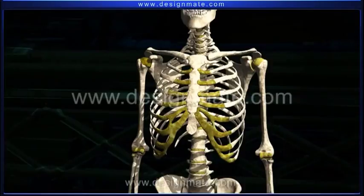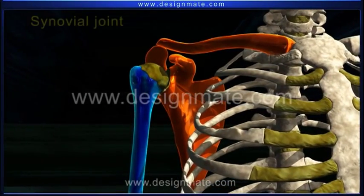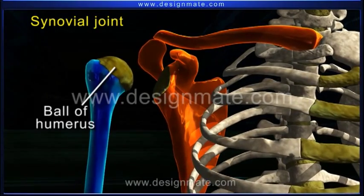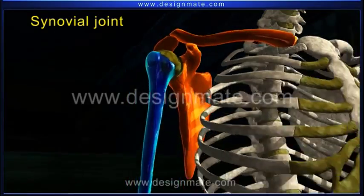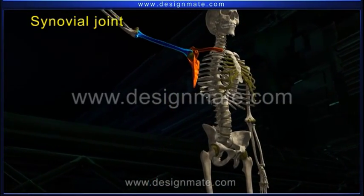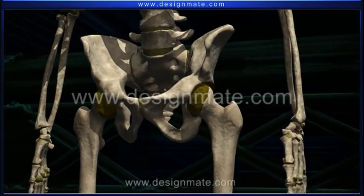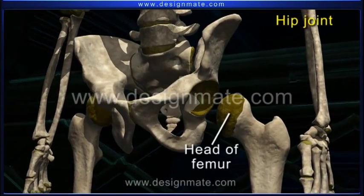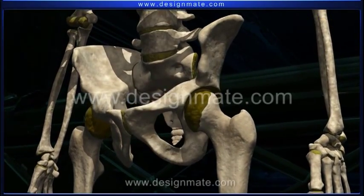The pectoral girdle is another type of joint that shows the ball and socket joint, or synovial joint, where the ball of the humerus fits in the glenoid cavity of the scapula. This joint helps in movement of the arm in all directions. Another example is the hip joint, where the head of the femur fits in the curved cavity of the acetabulum of the pelvic girdle.